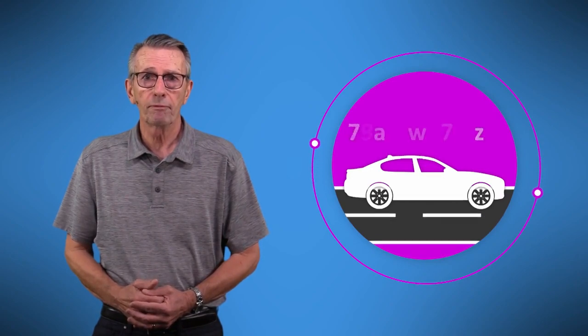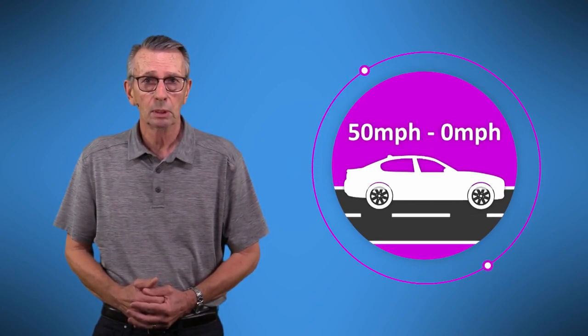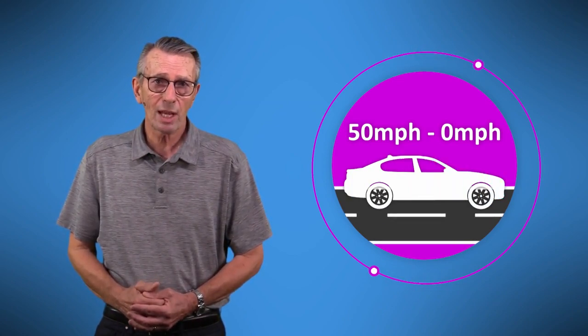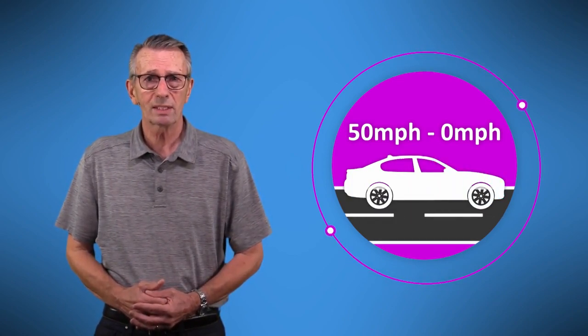In other words, if it takes longer to slow from 50 miles per hour to zero miles per hour, the same amount of force acts on the vehicle, but it's stretched out over time, so it has less influence on the occupants of the vehicle.